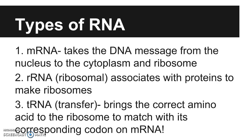There are several types of RNA. There's mRNA — messenger RNA — which takes the DNA message from the nucleus to the cytoplasm and is read by the ribosome. There's rRNA — ribosomal RNA — which associates with proteins to make ribosomes. So one part of the ribosome is rRNA and one part is protein, giving it a major role. The last type is tRNA or transfer RNA, which brings the correct amino acid to the ribosome to match with its corresponding codon on mRNA.